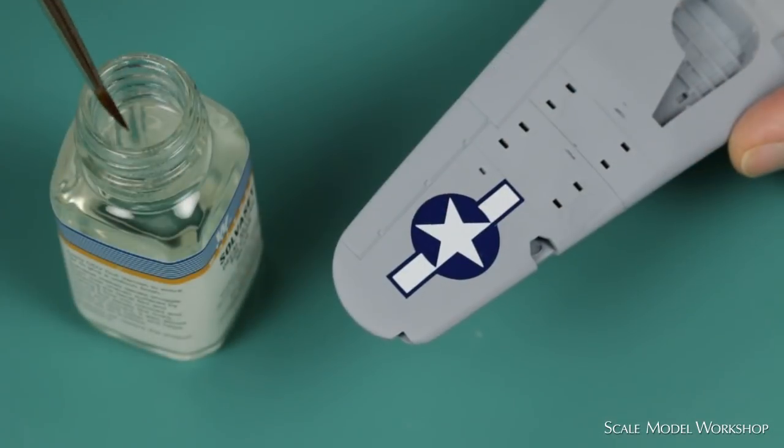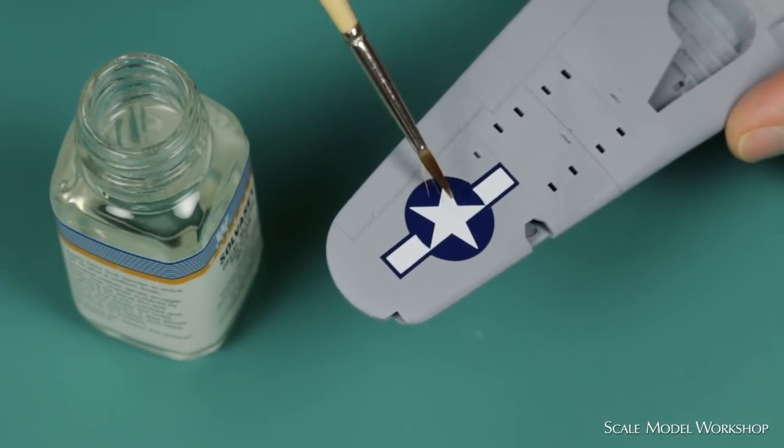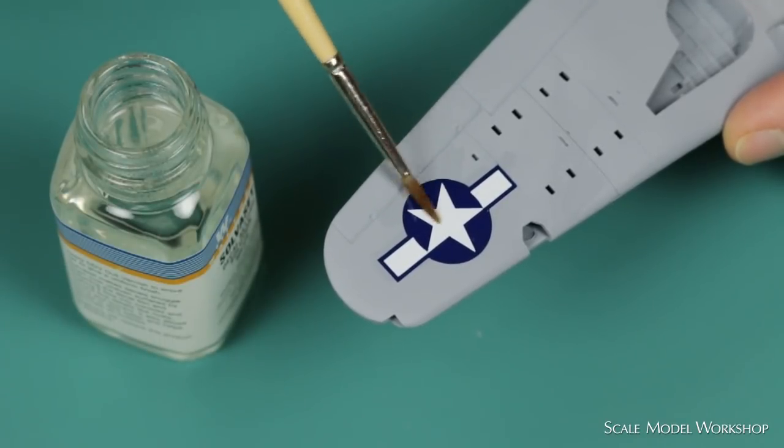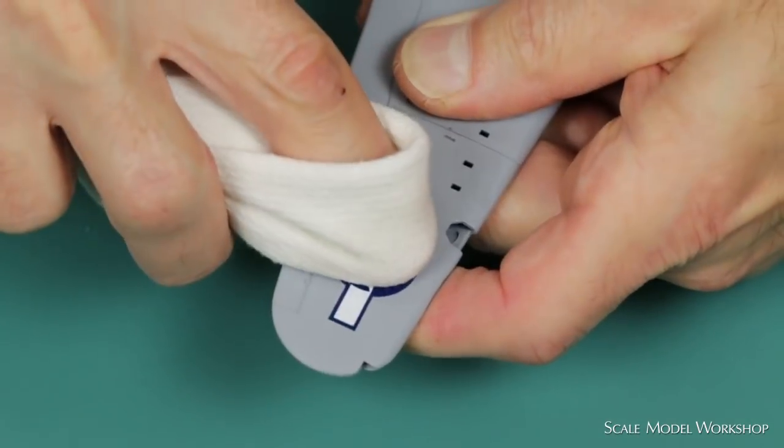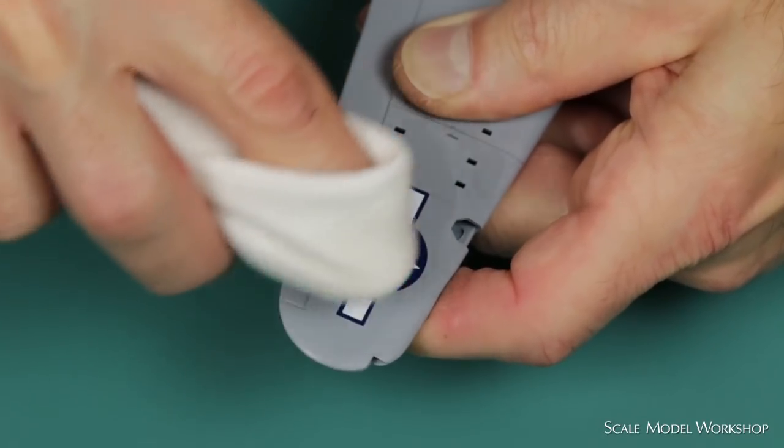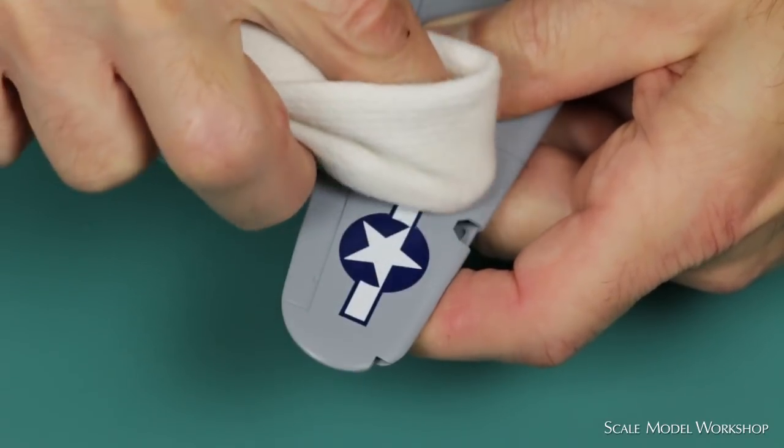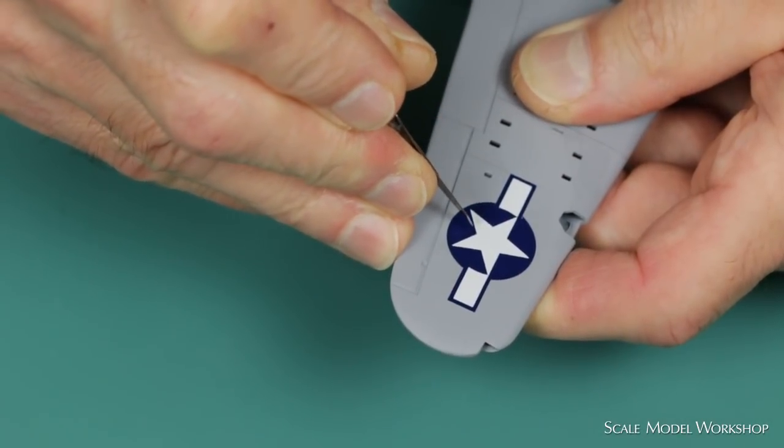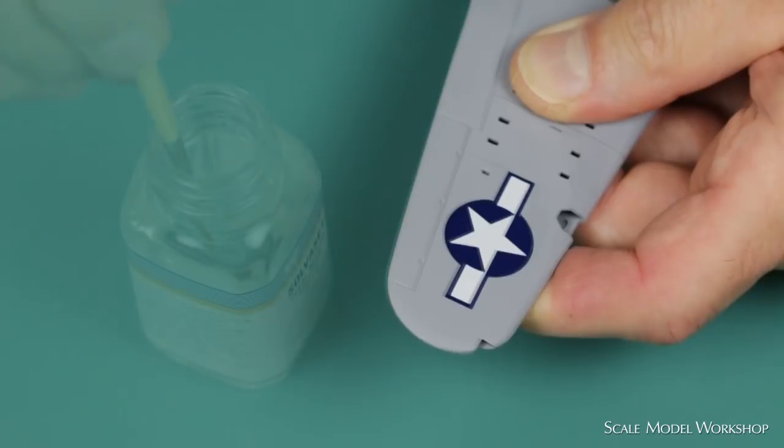I then apply a coat of Solvaset. The Solvaset usually causes the decal to wrinkle and tighten back up again. I again compress the decal with a warm, moistened towel. Depending on the adaptation, I might repeat this step. Any persistent bubbles can be pricked with a blade and softened with a drop of Solvaset.